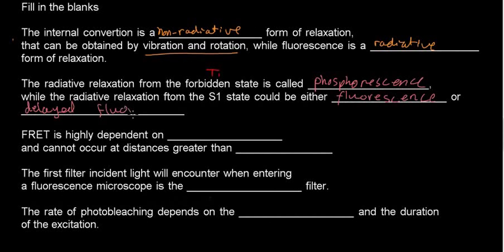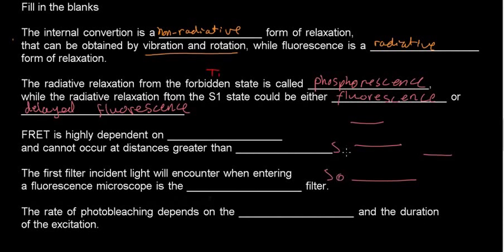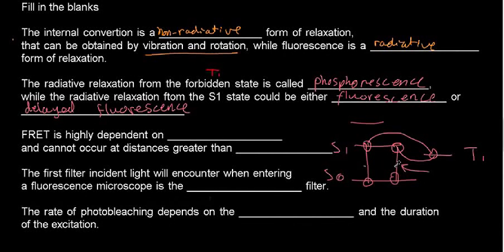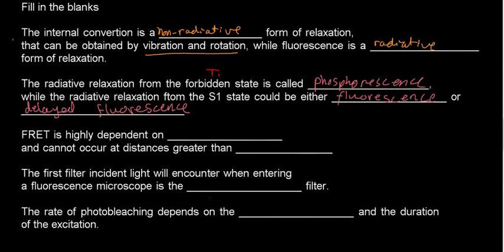In delayed fluorescence, these are the energy stages: S1 and T1. When I go from S1 radiatively to the ground state, that's fluorescence; from T1, that's phosphorescence. But if an electron is excited, goes to the triplet state, then goes back to the excited state S1, and then emits a photon — this is delayed fluorescence, because it took longer to emit that photon.